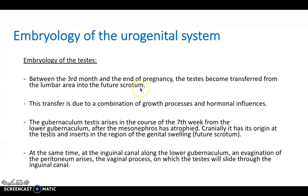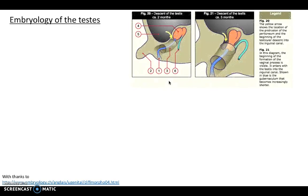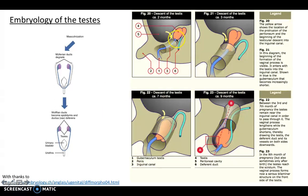For the embryology of the testes: between the third month and end of pregnancy, the testes are transferred from the lumbar area into the future scrotum. The testes move downward while the kidneys ascend upward into the lumbar area — so the kidneys and testes effectively cross over positions. This transfer is due to a combination of growth processes and hormonal influences. The gubernaculum is the driving force pulling the testes down into the scrotum. Embryological malformations can leave the testes in the lumbar area (cryptorchidism), which must be corrected quickly to prevent future cancers.